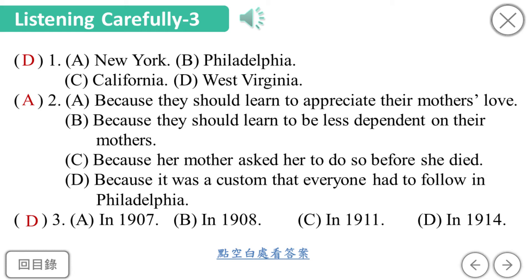In 1907, Anna got her mother's church in West Virginia to celebrate the first Mother's Day on the second Sunday of May — the same day that Anna's mother died. By the end of 1908, Mother's Day was celebrated all over Philadelphia.